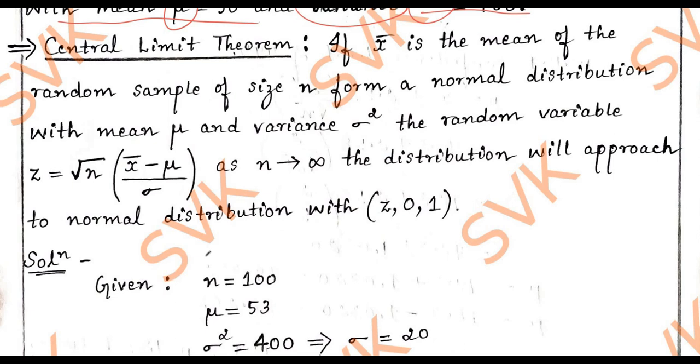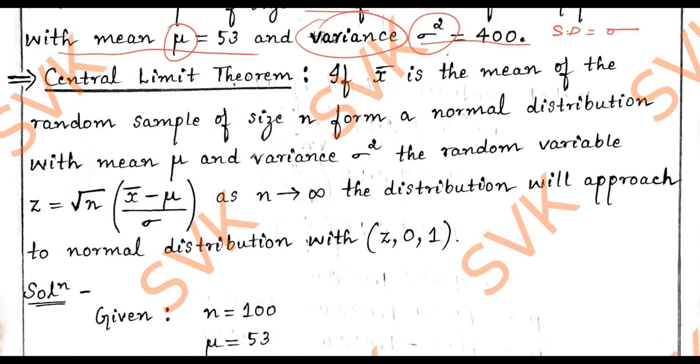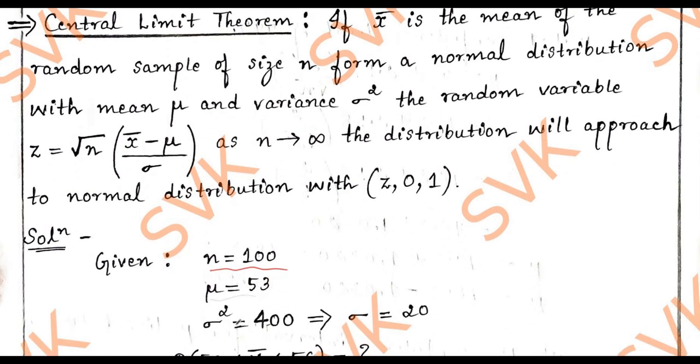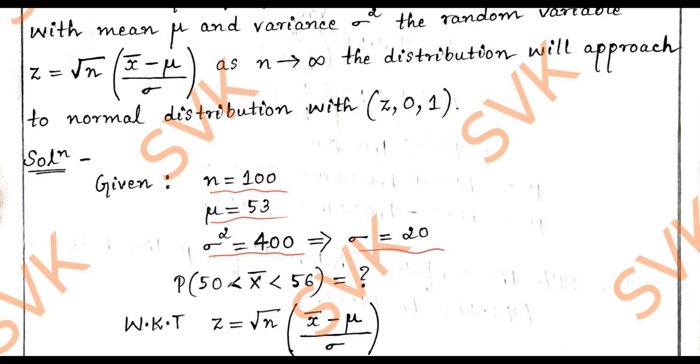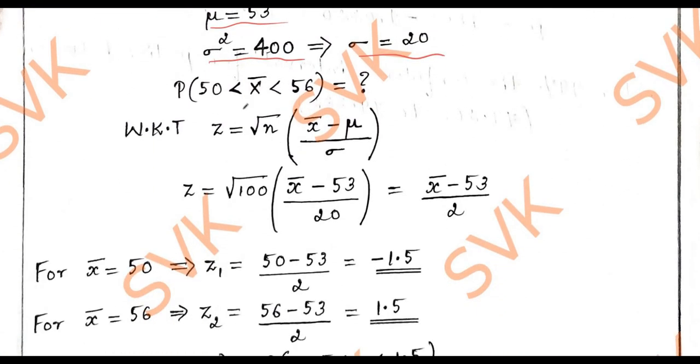This is the same as normal distribution what we solved in module 1. Here we will consider the given data: n = 100, μ = 53, variance is 400 so σ = 20. Then we need to find P(50 < x̄ < 56).